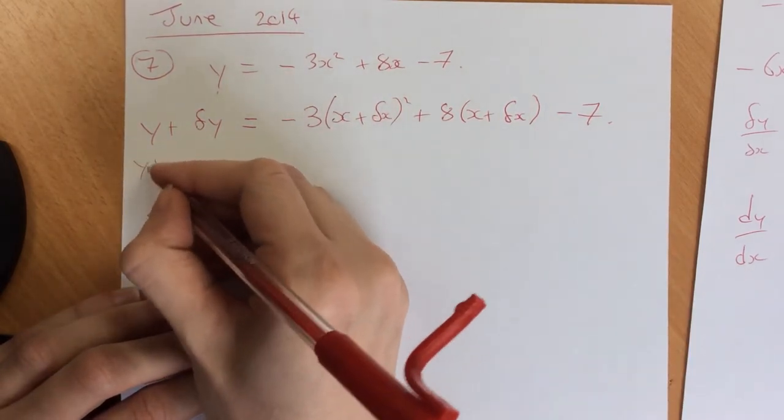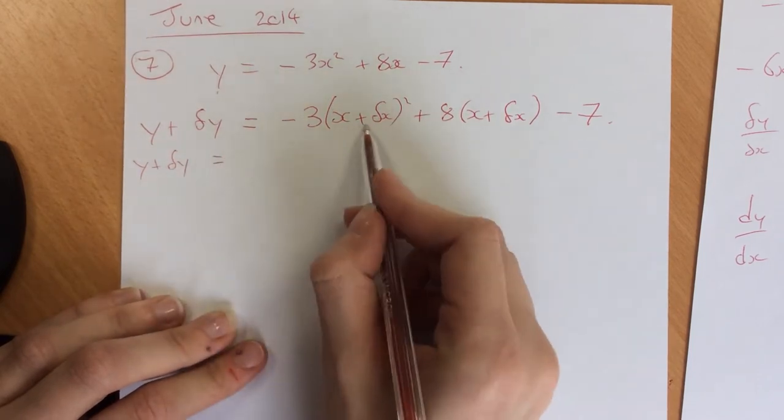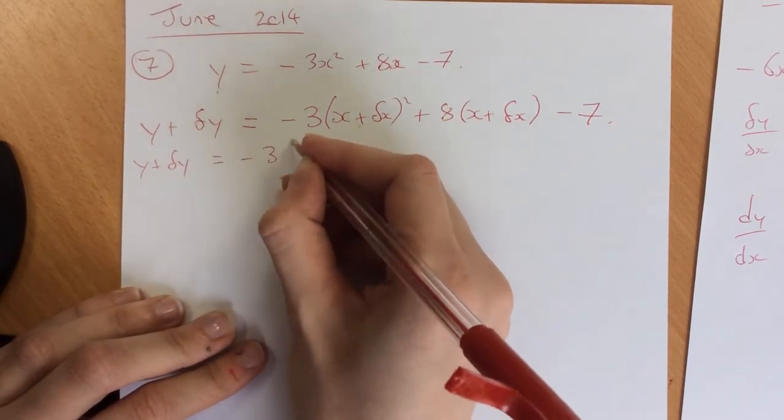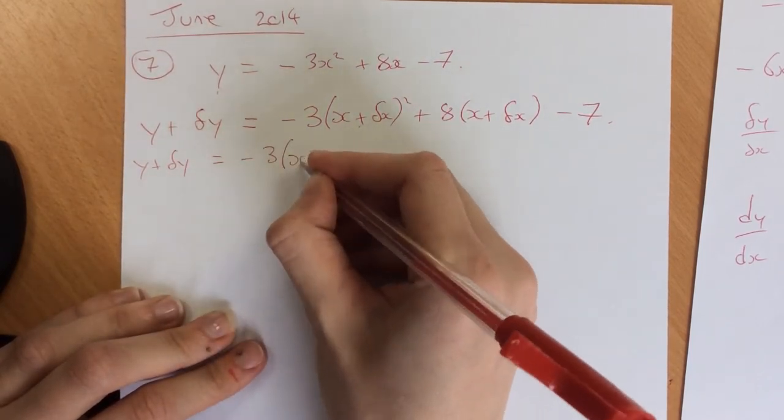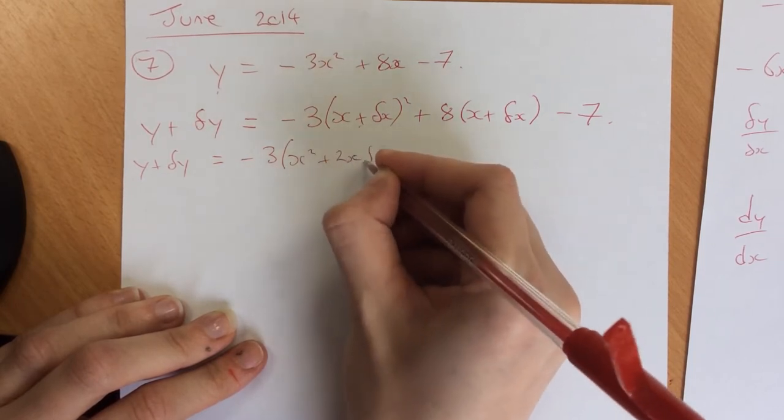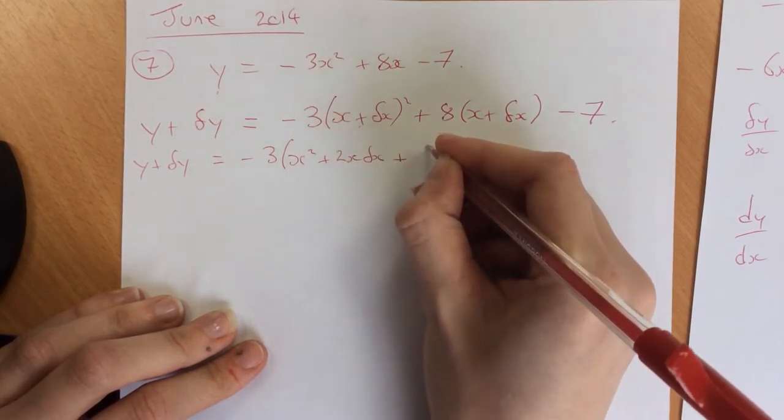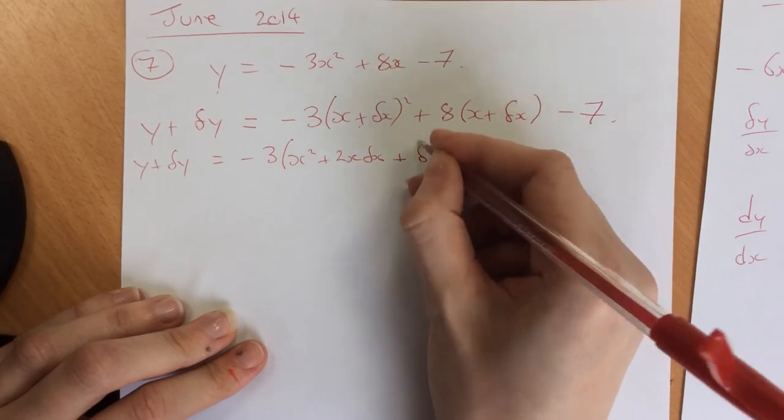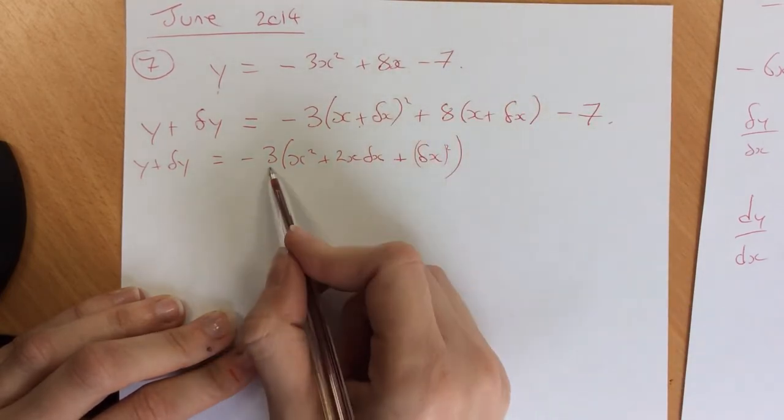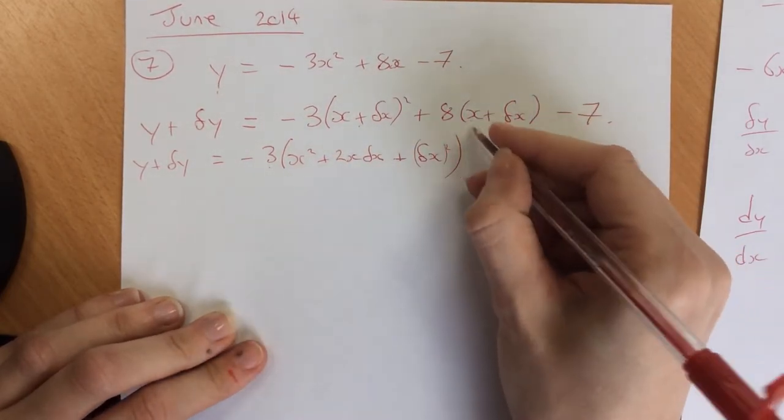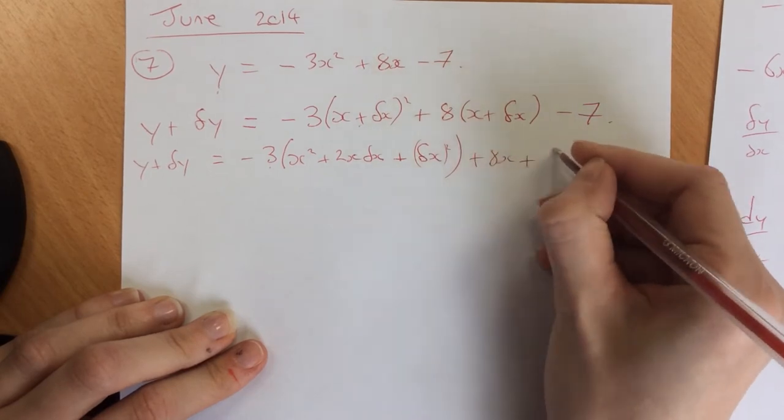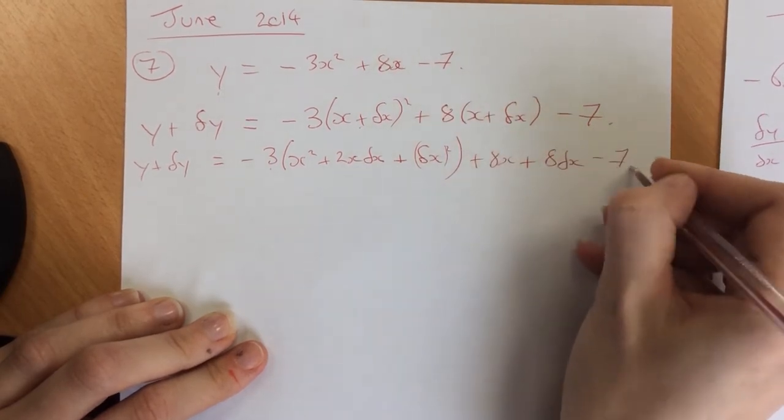The next thing you should do is keep this the same and expand this bracket. So I get -3 times (x² + 2x·δx + δx²), close the bracket because you've still got times by this -3, plus 8x + 8δx - 7.